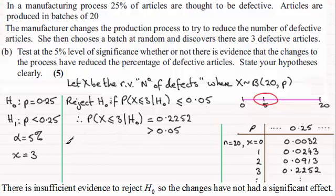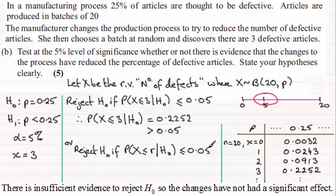I'm going to reject the null hypothesis if the probability of X being less than or equal to some particular value, which I'll call r, given that the null hypothesis is true, turns out to be less than or equal to 0.05, the 5%. And again, we'd need to use tables. So from tables, we're looking for a value in this column here which is as close as we can get but below 5%.